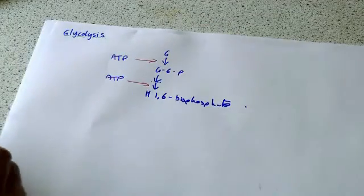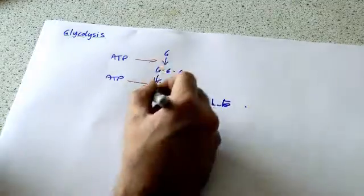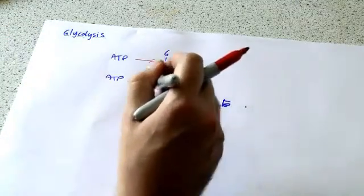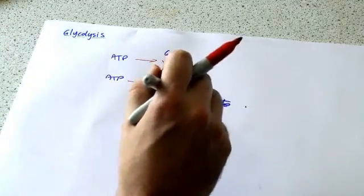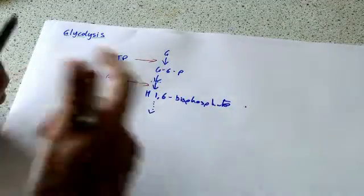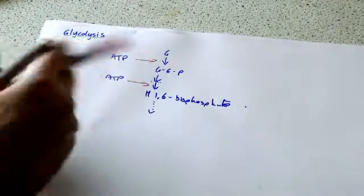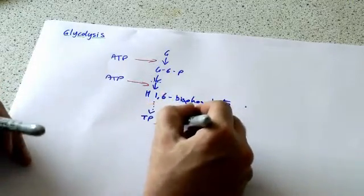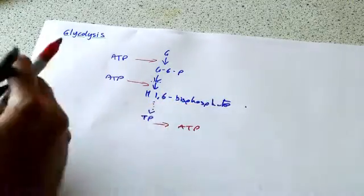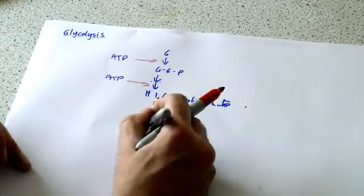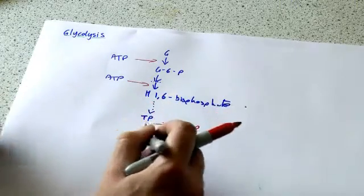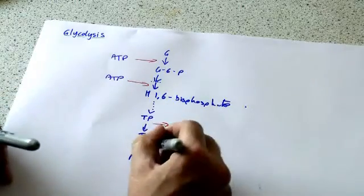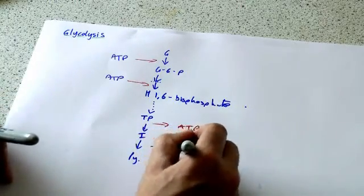So we put in two molecules of ATP. Then later on in the reaction, when we've got our last steps, we go from triosephosphate and we get ATP coming out as that's converted into intermediates, and the intermediates then go to pyruvate, and we also get ATP out.